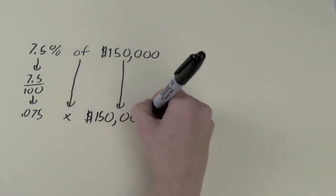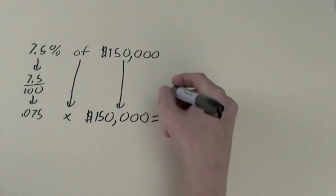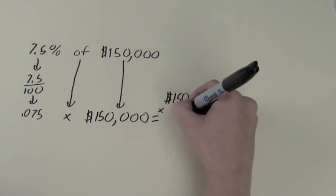So now the fraction turns into 7.5 divided by 100. This equals 0.075.